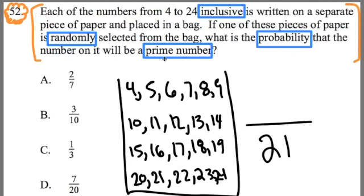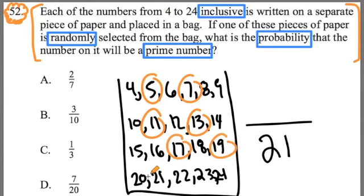You got it. You review that definition of prime. It's a number that only has two factors, one and itself, like 5 and 7. What other numbers? 11 and 13, 17 and 19, and 23. We find out that there's seven prime numbers out of our total set of 21.